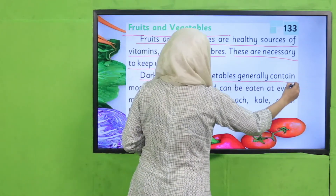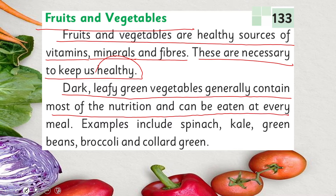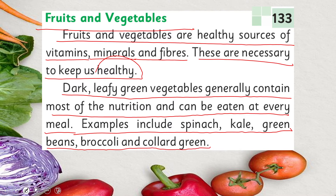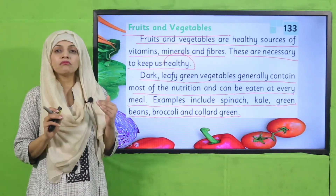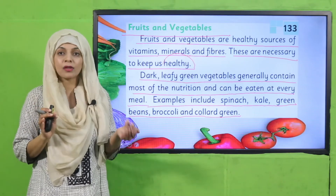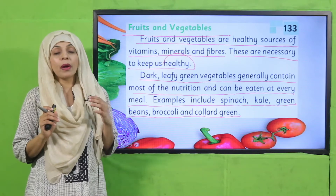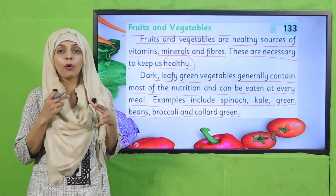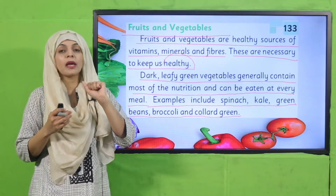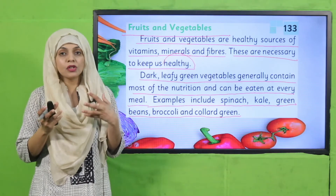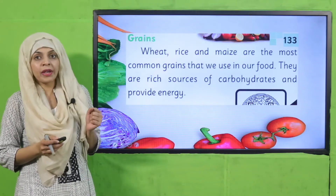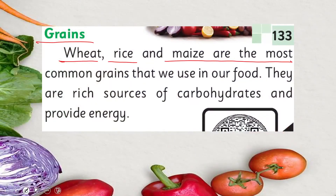Dark leafy green vegetables generally contain most of the nutrition and can be eaten at every meal. Examples include spinach, kale, green beans, broccoli, and collard greens. Leafy vegetables are very rich in different kinds of nutrients, they are the healthiest, and you can add them to every meal.